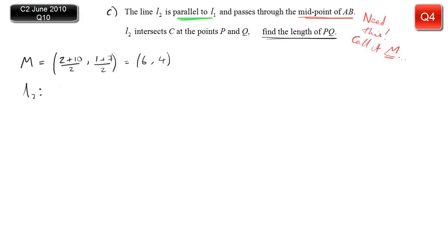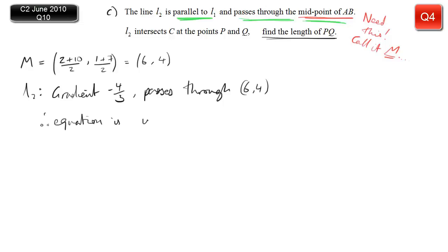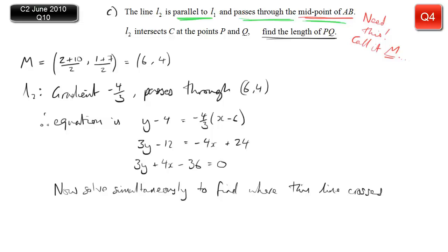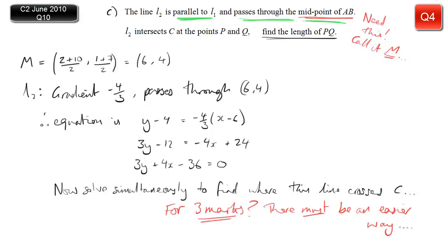Line L2 is parallel to L1, so its gradient is minus four thirds. It also passes through the midpoint (6, 4). Substituting the gradient and point into the standard line equation and rearranging gives the equation of L2. Now we need to find P and Q — where L2 meets the circle — which means solving simultaneously. But the circle has quadratic terms so it would be messy, and for only three marks there must be an easier way.